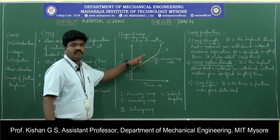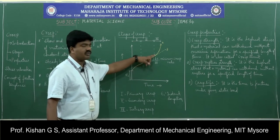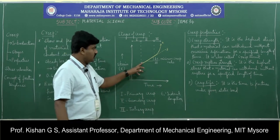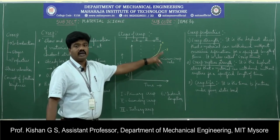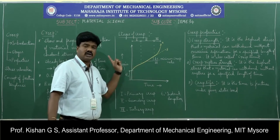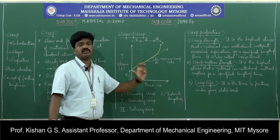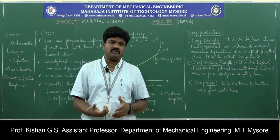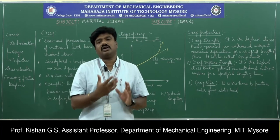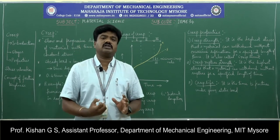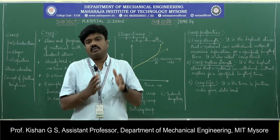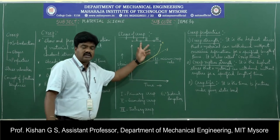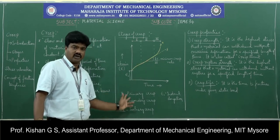In the secondary stage, when the load is kept constant for a further period, the strain rate becomes steady, giving a straight-line representation. The slope represents the minimum creep rate, where strain rate is directly proportional to time. This is because strain hardening and recovery effects are balanced — whatever elongation occurs, the recovery rate is equal, maintaining this linear behavior.